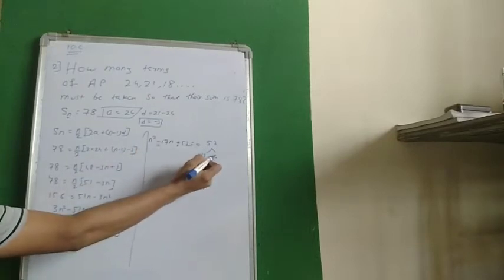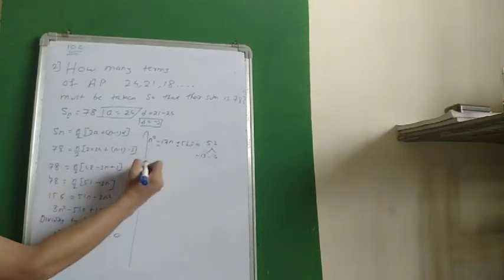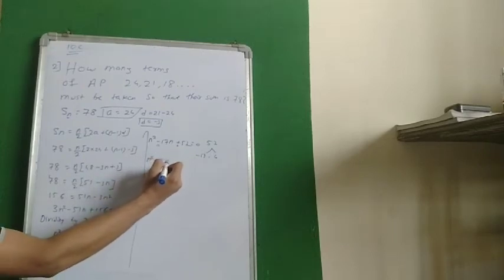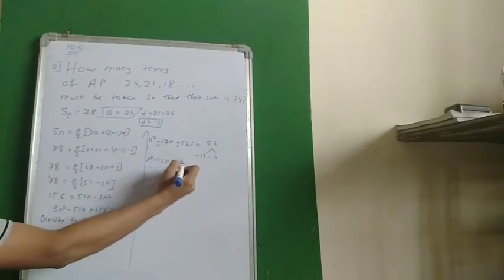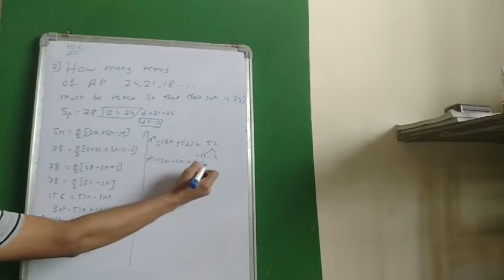So we will take both the terms as minus. Splitting the middle term, N square minus 13N minus 4N plus 52 is equal to 0.